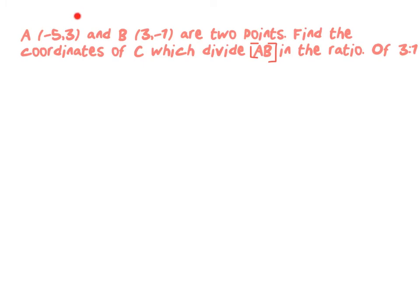The question here: A is (-5, 3), B is (3, -1), and there are two points. Find the coordinates of C which divide AB in the ratio of 3 is to 1. Always with any of these things, the easiest thing you can do is a bit of a visualization.